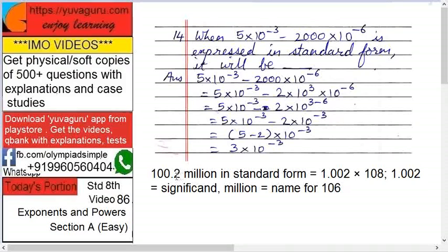Now let's take one more example of standard form so that you understand it better. Suppose if I want to write 100.2 million in standard form. So here million means what? 10 raised to 6. So what we will have to do? 100.2 into 10 raised to 6. So what next? Standard form means what? Only one digit over here.